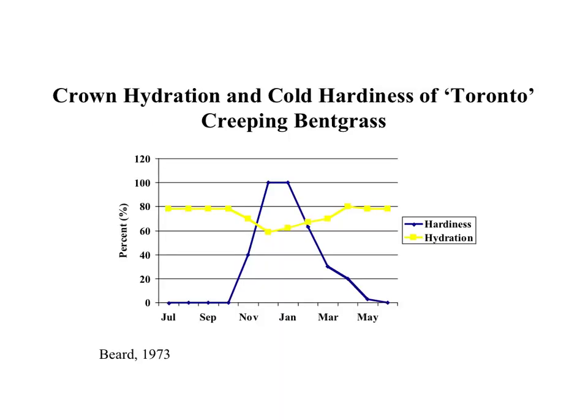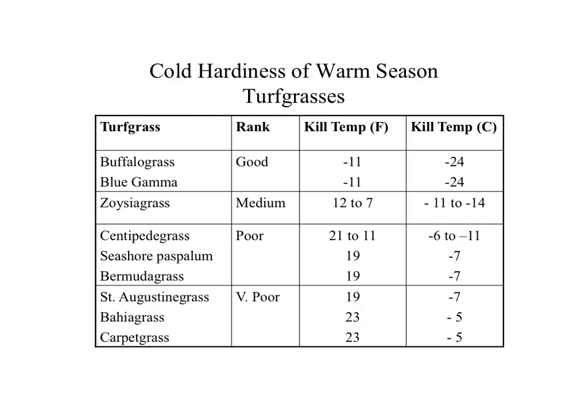The dehydration process is closely associated with the cold hardiness of turfgrass plants. In studies done by Dr. James Beard and others, the maximum cold hardiness in turfgrasses is reached from roughly December through early February in the Northern Hemisphere. Warm season turfgrasses do not have the same cold hardiness as cool season turfgrasses, and a major limitation to warm season turfgrass adaptation is a lack of tolerance to cold temperatures. Bermudagrass, common on golf courses and athletic fields, is susceptible to cold and would be considered to have poor cold hardiness.